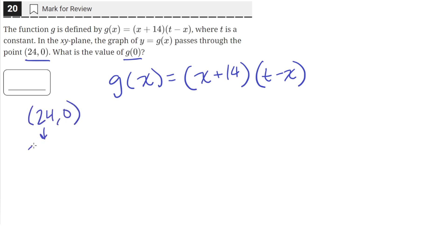This is an xy coordinate where when x equals 24, y equals 0, or g(x) equals 0. So we can plug that in to find the value of t. g(x) will be 0, and x will be 24.